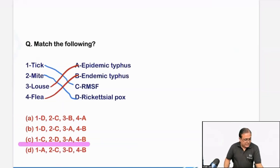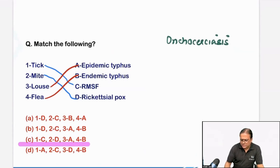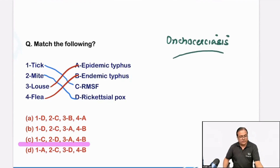Blackfly — in case it was in the choices, it is the vector of a disease which does not exist in India: onchocerciasis. Among all the vectors, blackfly also has the highest flight range of 100 miles.